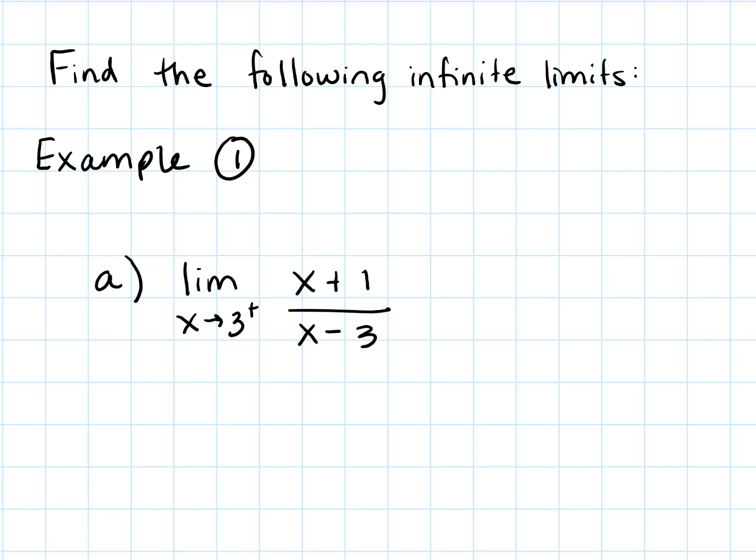Let's look at a couple of examples finding infinite limits. So let's take a look at this first one. We have a rational expression, x plus 1 over x minus 3, and we want to find the limit as x approaches 3 from the right. So this is a directional limit, and we're approaching 3 from the right.